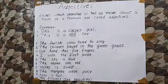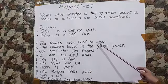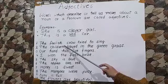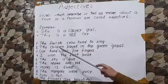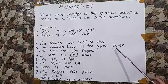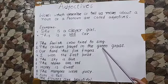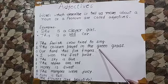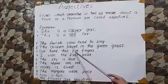Now children, let us see some more examples. The foolish crow tried to sing. Now foolish tells us more about the noun crow, so foolish is an adjective in this sentence. The children played in the green grass. Now here green describes the color of the noun grass.